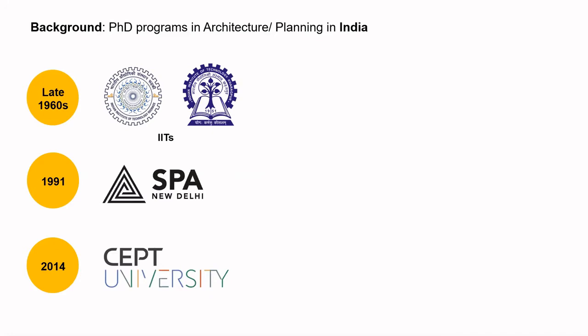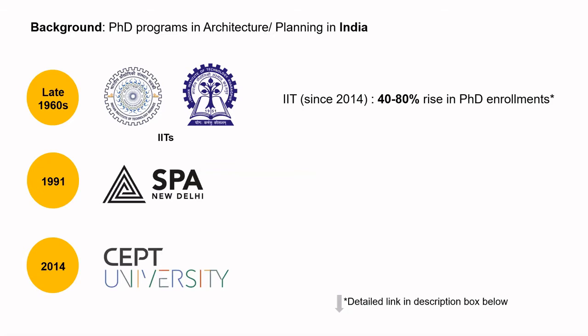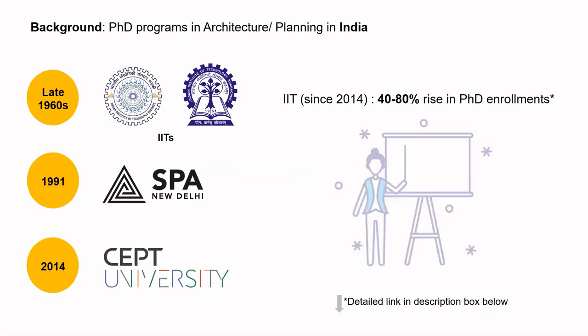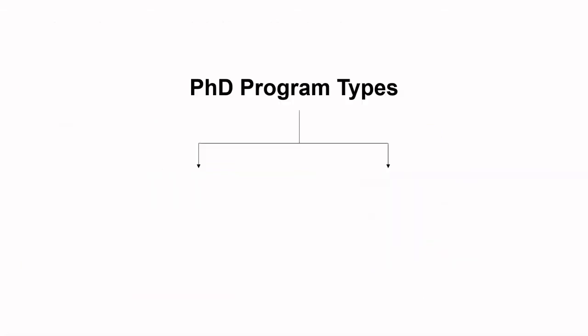In fact, a recent report even mentioned that there is an attempt from the government to change the image of premier institutes from undergraduate degree colleges to research-driven establishments. IITs since 2014 alone have seen a 40 to 80 percent increase in their PhD enrollments. Besides, having a doctorate degree is slowly but compulsorily becoming the minimum requirement for a career in academics. As a cumulative effect of all these events, types of doctoral programs have expanded to offer opportunities to more and more people at different stages of their life having different priorities.